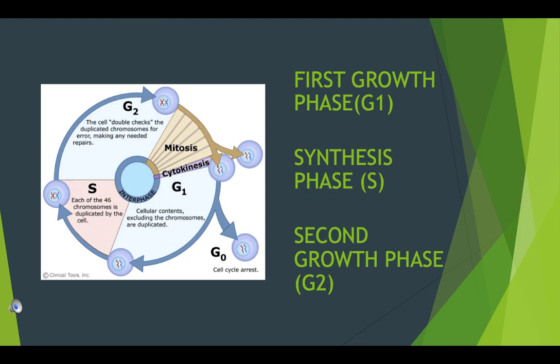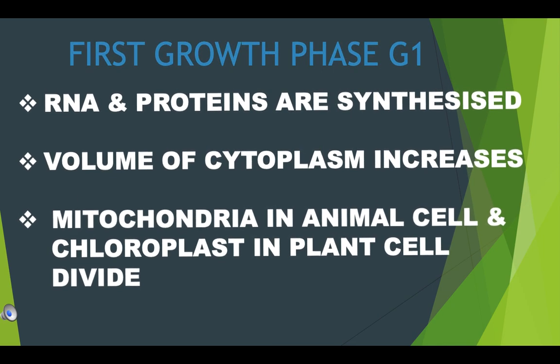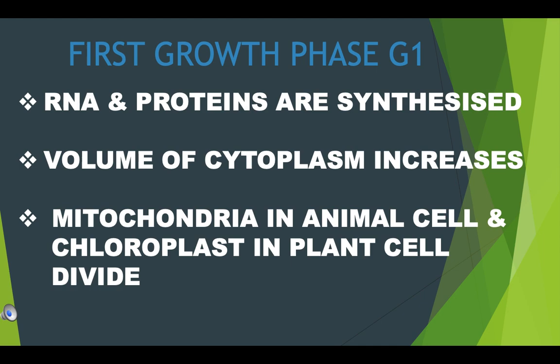As seen in the diagram, interphase itself has three phases: the first growth phase G1, synthesis phase S, and second growth phase G2. The G1 phase, also called the gap one phase, is the first of the four phases of the cell cycle that takes place in eukaryotic cell division.